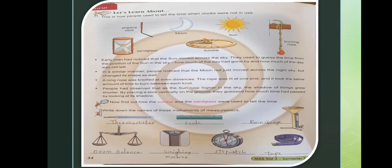People had observed that as the sun rose higher in the sky the shadow of things grew shorter. By placing a stick vertically on the ground they guessed how much time had passed by looking at its shadow. So by the shadow stick also they had identified. So now here, find out how the sundial and the sand glass were used to tell the time. Maybe we have to use them: sand glass and sundial. So we don't have now. So next we will move here.